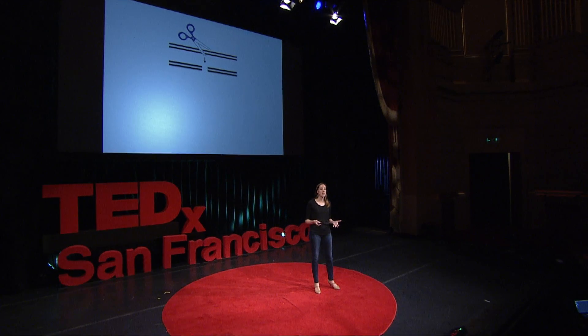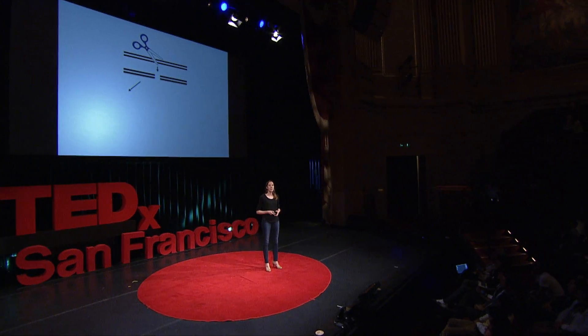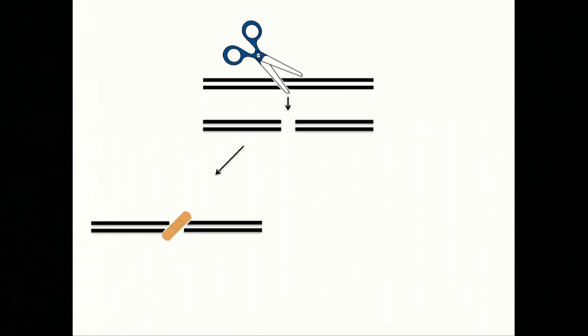Most cells have at least two ways to fix these breaks, and depending on which one they use, different editing outcomes are possible. One method is called non-homologous end-joining, or NHEJ — the molecular equivalent of putting a bandage or stitches onto the broken site. The cell glues the broken bits back together, but in the process inserts or deletes a few nucleotides, ultimately disrupting the ability of the gene coded there to be expressed. This is how we delete genes from the genome, or knock them out.